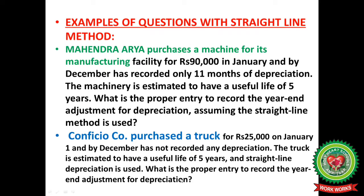Now we will do some examples with the straight line method. Mahendra Aria purchases a machine for Rs 90,000 in January and by December has recorded only 11 months of depreciation. The machinery is estimated to have a useful life of 5 years. What is the proper entry to record the year-end adjustment for depreciation, assuming the straight line method is used?